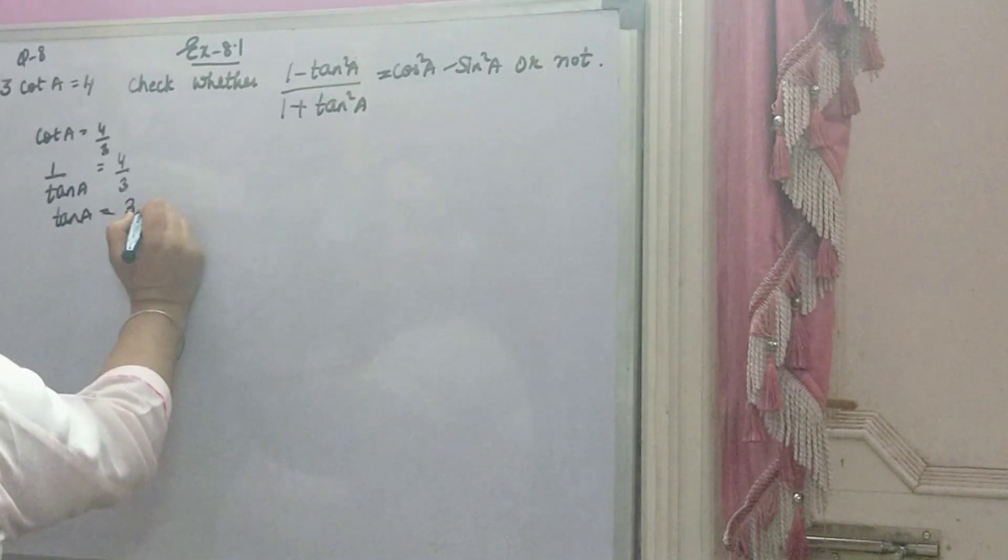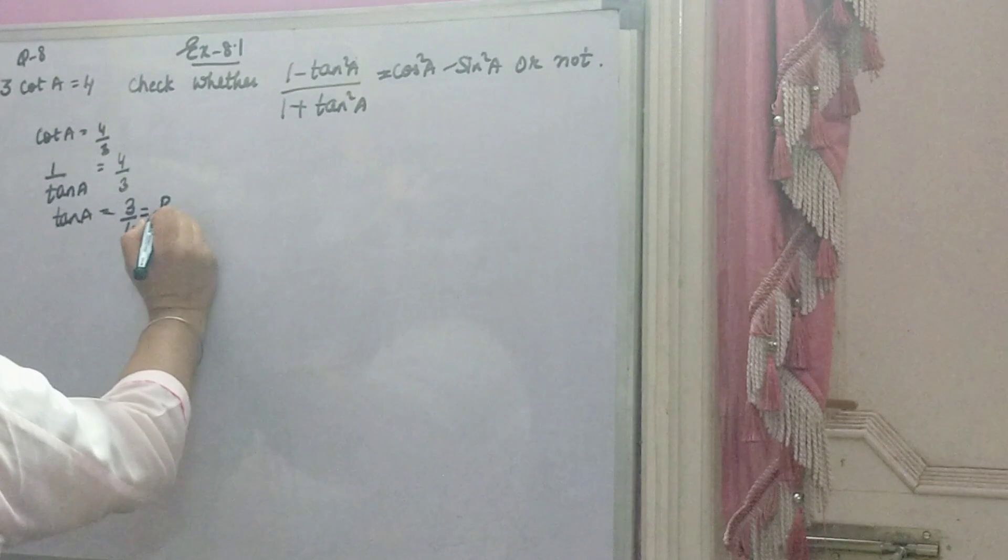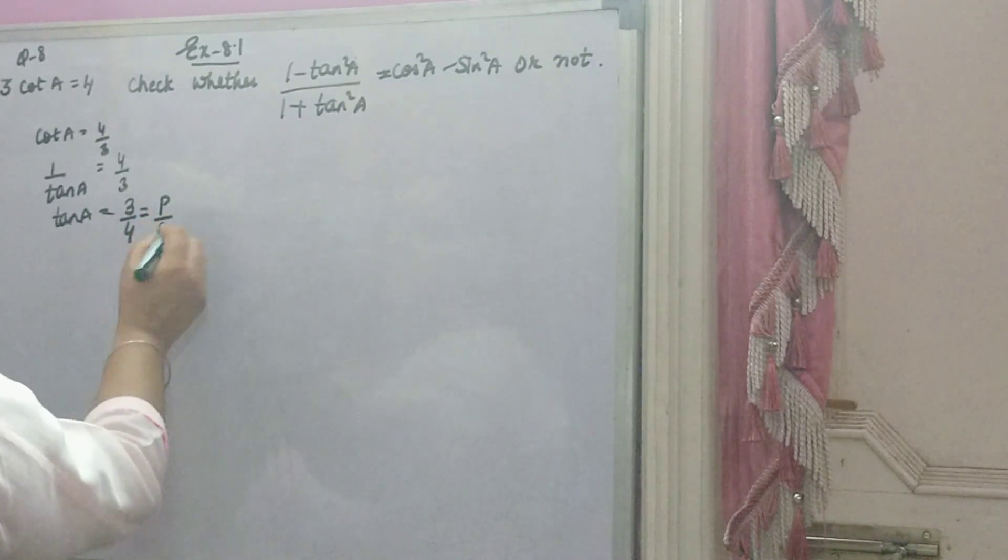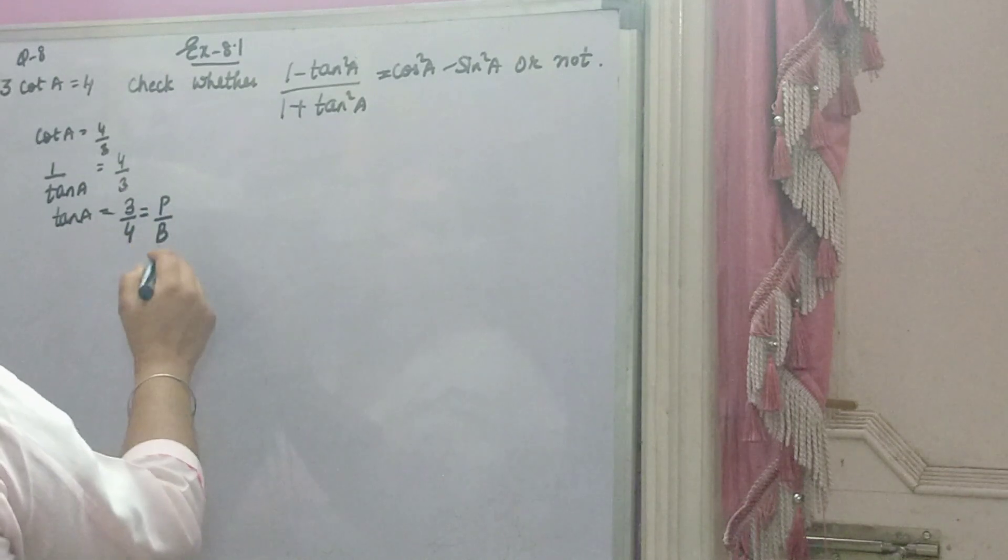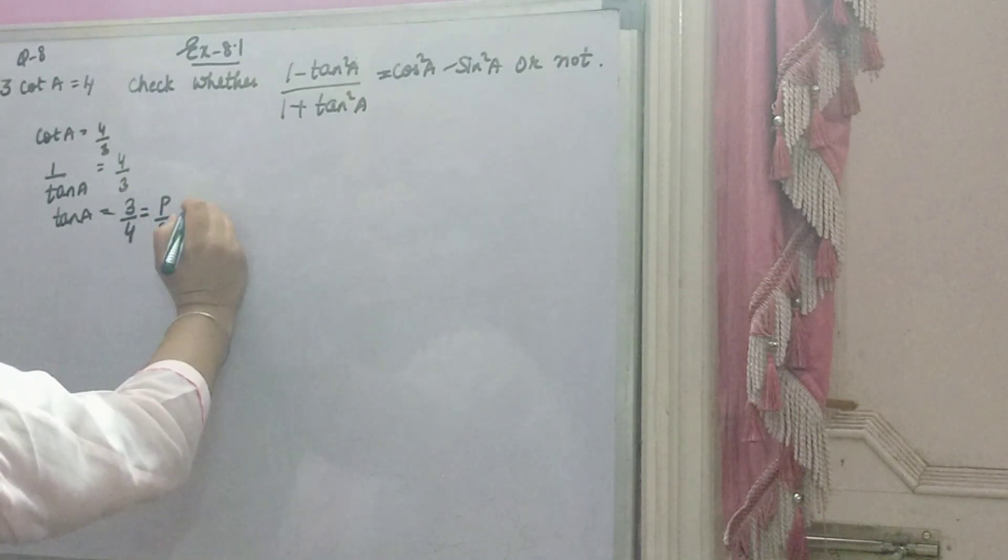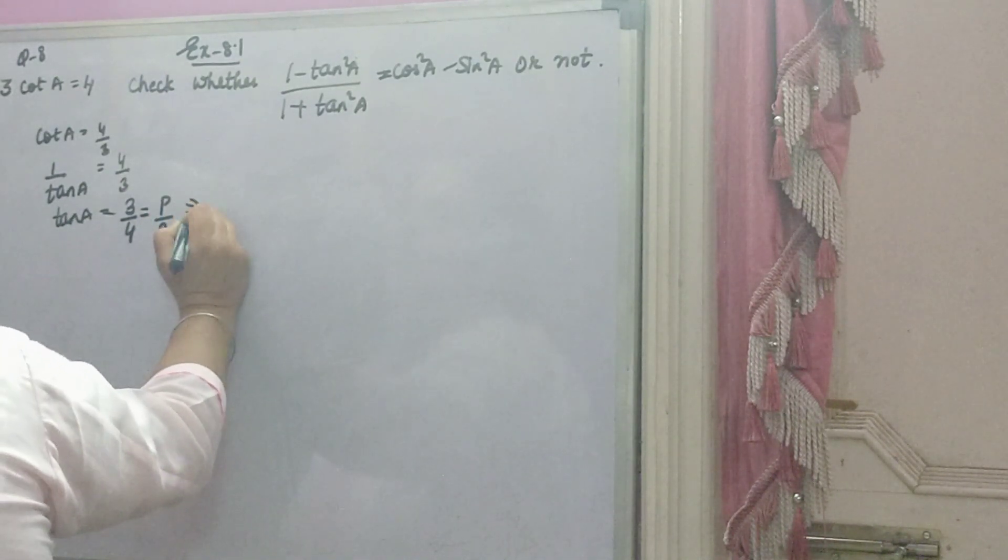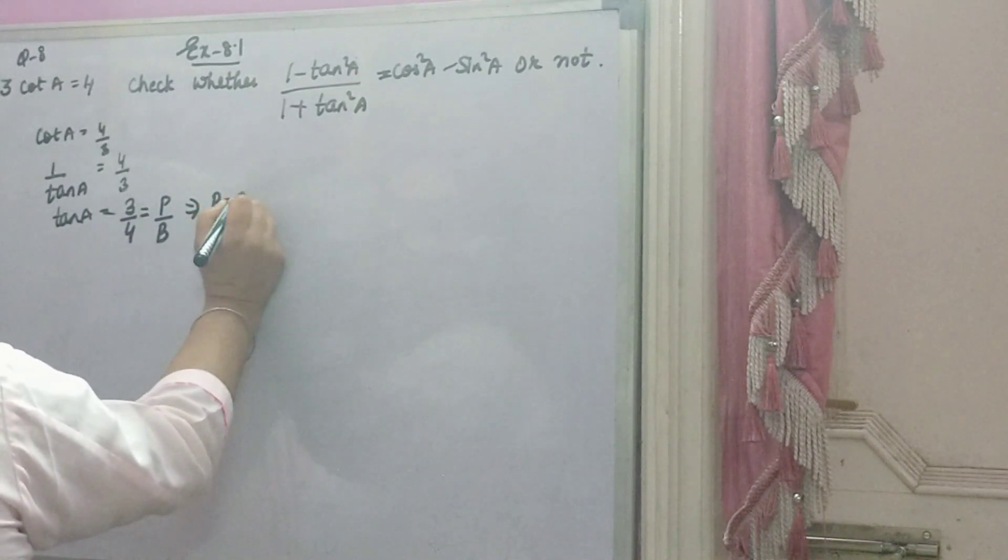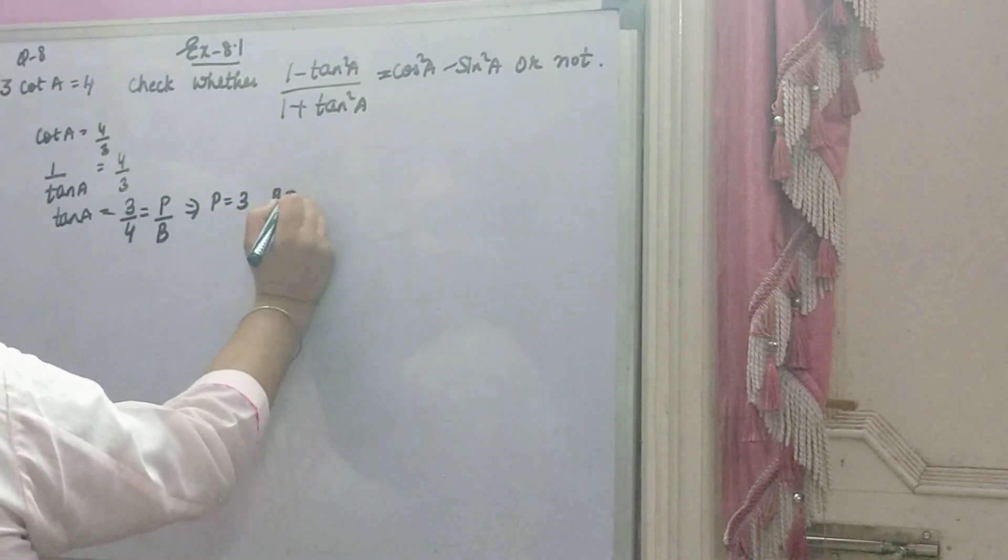Ab, tan A hota hai, perpendicular by base. Ye wala trick yaad karne ka tariqa ki tan A kya hota hai, cos A hota hai. Main aap description box me dal dungi wali video. You can see. Perpendicular a gaya 3, base a gaya 4.